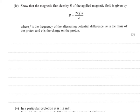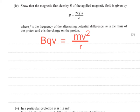Part four says: show that the magnetic flux density B is given by B = 2πFM/E, where F is the frequency of the alternating potential difference, M is the mass of the proton, and E is the charge on the proton. This expression comes from putting the magnetic force on a charged moving particle equal to Mv²/R — not because two forces are balanced, but because Mv²/R is the centripetal force provided by the magnetic force. So we start by saying BQV = Mv²/R.